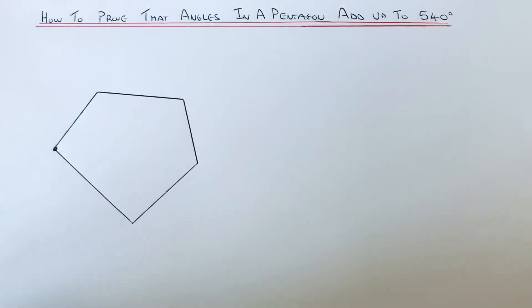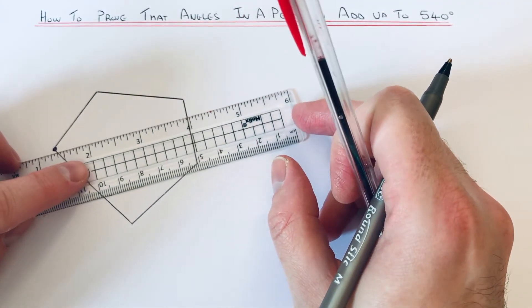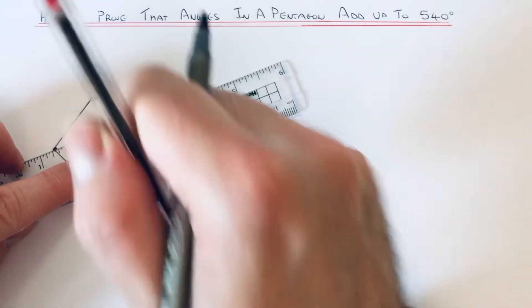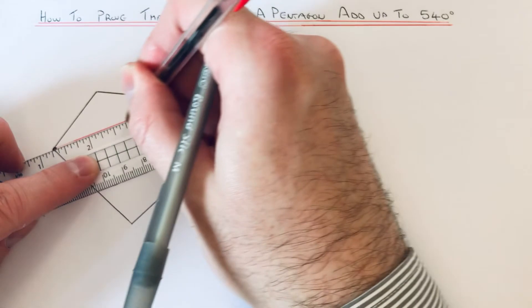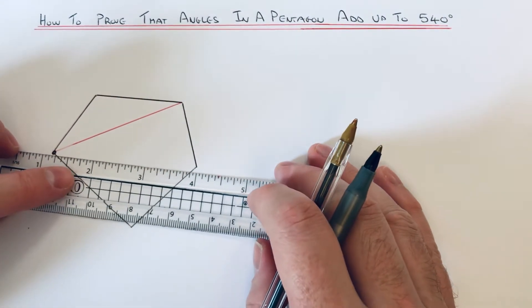So a diagonal is a line which goes from one corner to another corner through the shape. So I'm gonna do a diagonal here, and we can also do another diagonal to this corner here. So there's no more diagonals we can make using this vertex here.